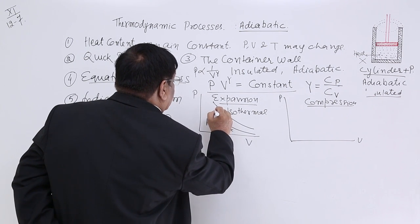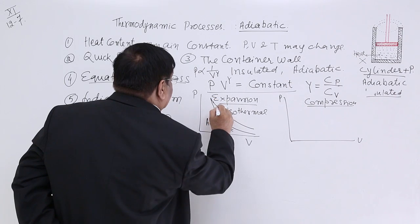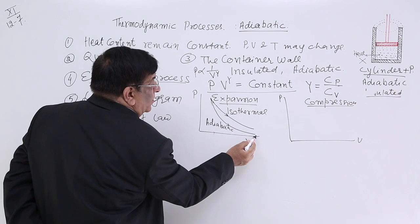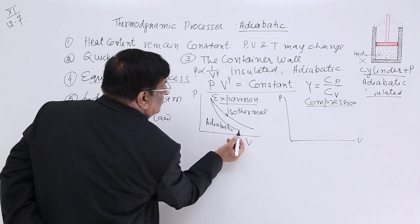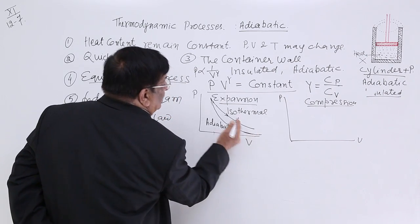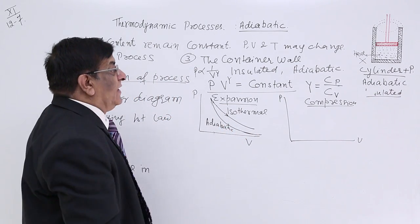So, there should be no doubt. Let us make it this way. But the slope is more in adiabatic. So, please remember this is adiabatic and this is isothermal expansion.